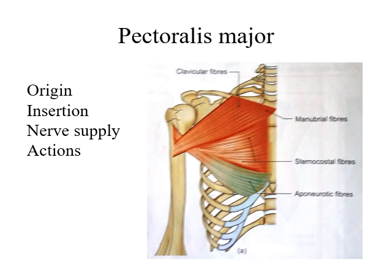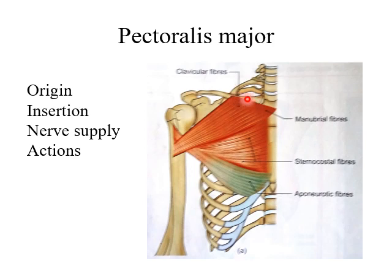Pectoralis major is the largest muscle of the pectoral region. Whenever you describe any muscle, you describe its origin, insertion, nerve supply, and actions. The pectoralis major arises from many regions: the anterior surface of the medial two-thirds of the clavicle (clavicular fibers), the anterior surface of the manubrium and body of the sternum up to the sixth costal cartilage (sternal fibers).